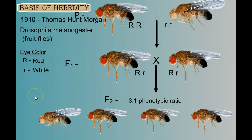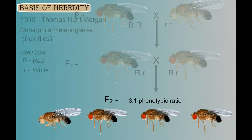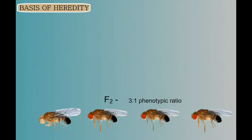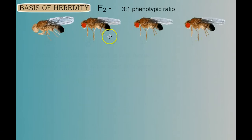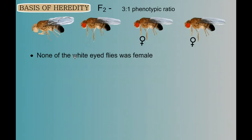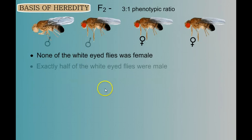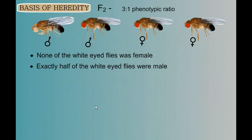At this point you should be saying, why are we talking about this? We knew that was going to happen. Well, let's look at these F2 flies a little bit closer, because something very interesting is going on. When you had 3 to 1 red eyes to white eyes, it's more interesting that not a single one of the white-eyed flies was female, and exactly half of the male flies had white eyes. Really, gender shouldn't matter — we should have a 3 to 1 ratio regardless of whether they're male or female, but it wasn't like that.